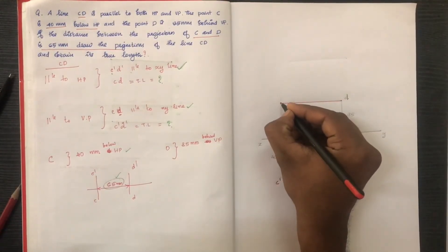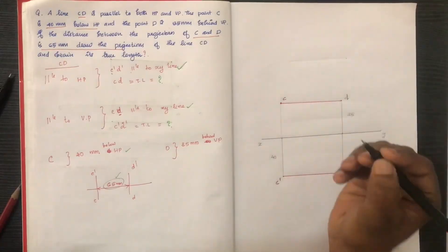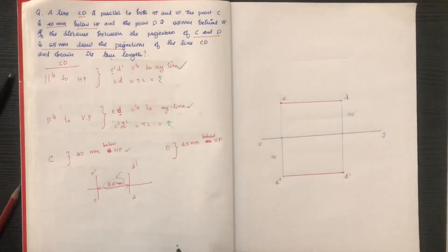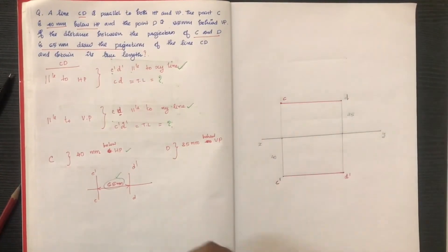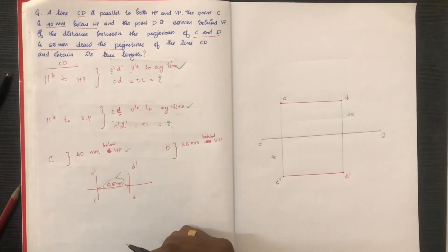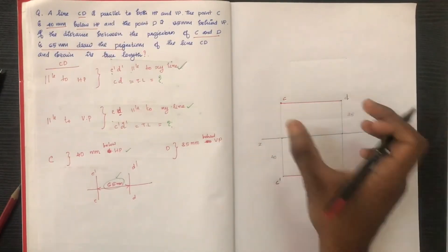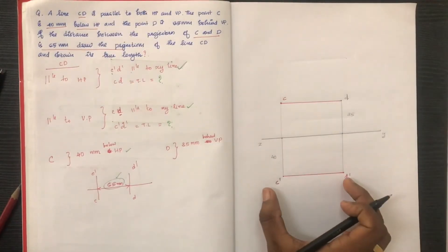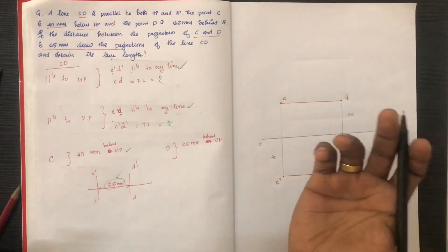CD is parallel to the XY line. CD is drawn darker; the dimension is marked darker.